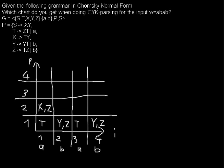Let me color this for you. We could either have the Z rule, which you get from T and Z. Or you may have an X, which you can derive to T and Y — or which you got from them when going bottom-up. So that's what we have to do with every cell: write down every possibility.